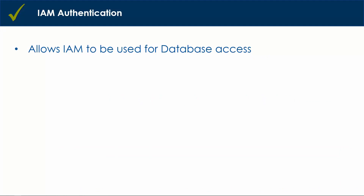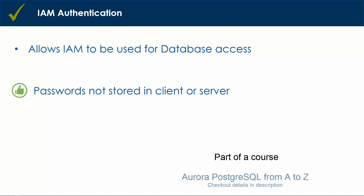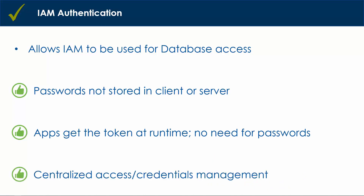Here are the key points. IAM authentication allows IAM users and roles to be used for database access. Passwords need not be stored in the client or server for IAM authentication. Apps get the token at runtime with IAM auth, and there is no need for apps to store a password anywhere. IAM authentication makes it possible to carry out centralized access and credentials management for applications, users, and databases.